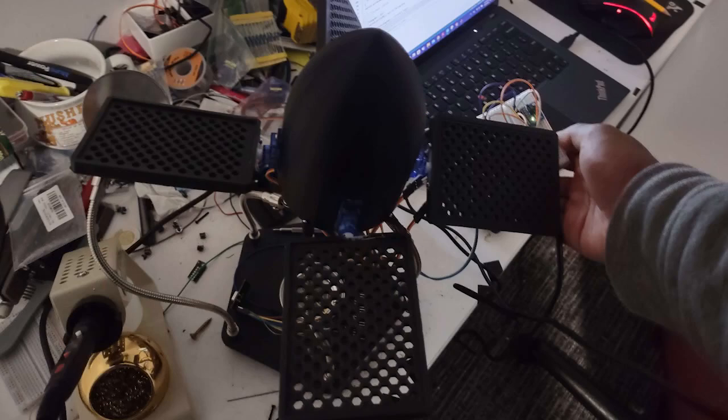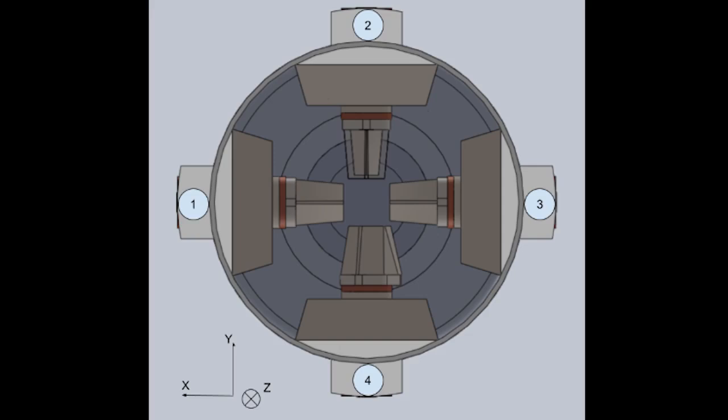The X and Y axis of the gimbal are actuated by two SG90 servomotors, set to a default value of 90 degrees. The servomotors will pull the X and Y gimbal rigs connected to the rocket motor.